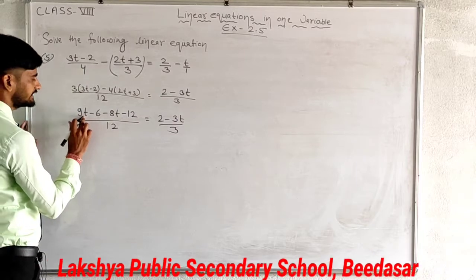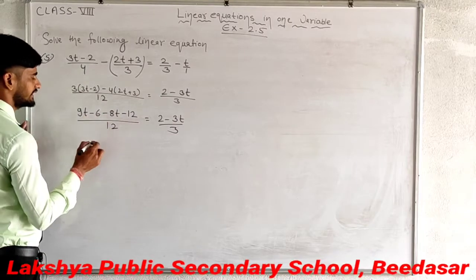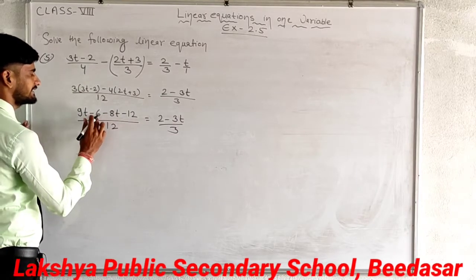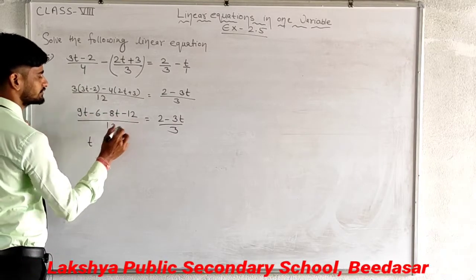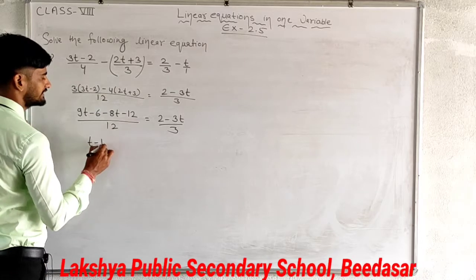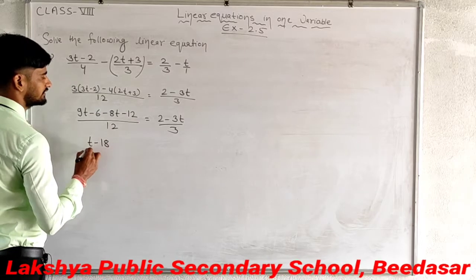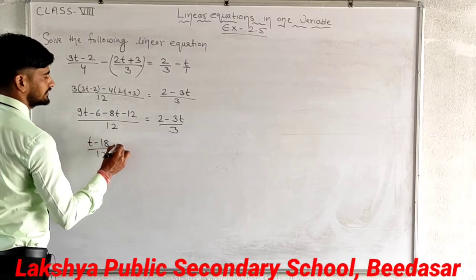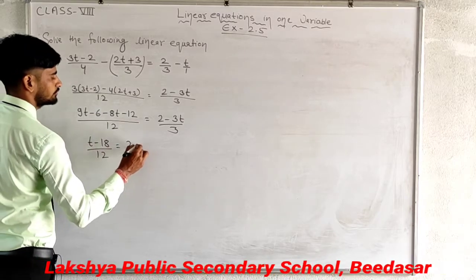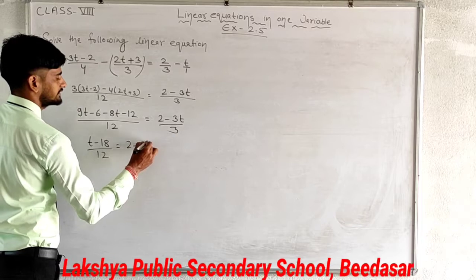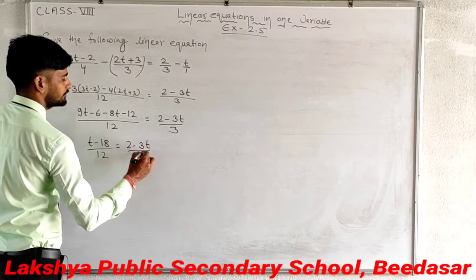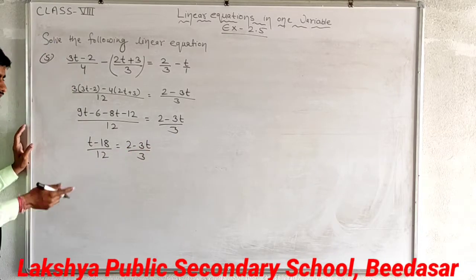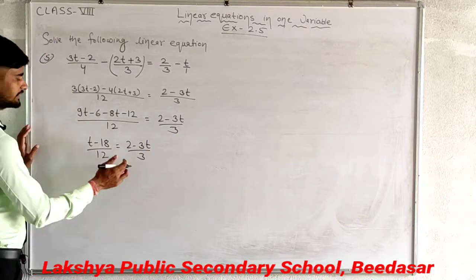Combining: 9t minus 8t gives t, and minus 6 minus 12 gives minus 18. So we have t minus 18 upon 12 equals 2 minus 3t upon 3. Now cross multiply.